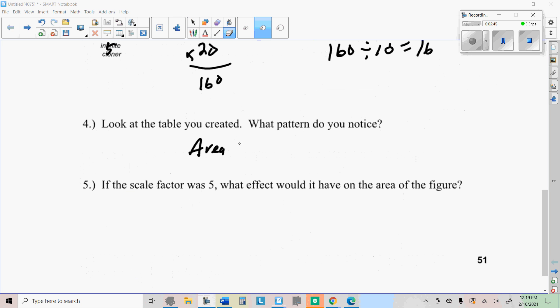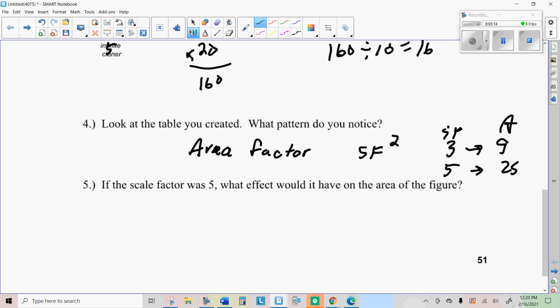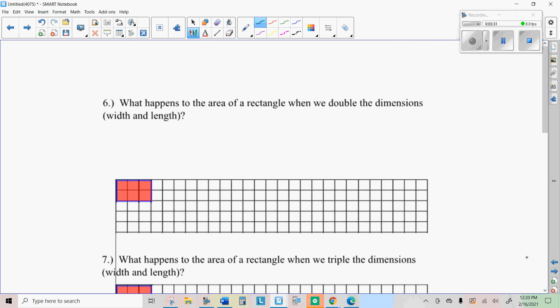Here's how I would say that, that the area factor is whatever the scale factor is squared. Let's just use SF, scale factor squared. So when the scale factor was three, the area factor was nine. If the scale factor was five, the area factor would be 25. So that's the answer to the next problem. It would be 25 times, the area would be 25 times greater if you use a scale factor of five.